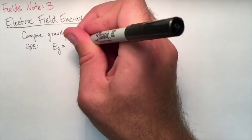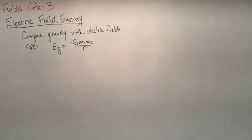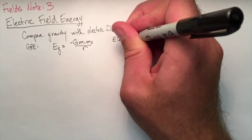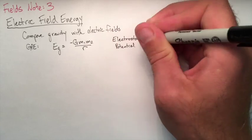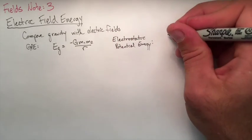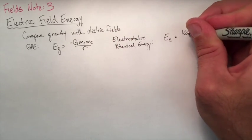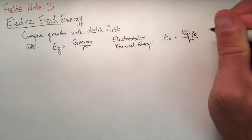Gravitational potential energy is equal to negative g m m over r. If we actually look at electrostatic potential energy, the grand equation is very similar to that: k q1 q2 divided by r.